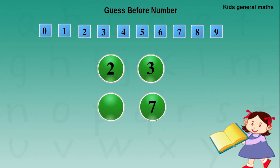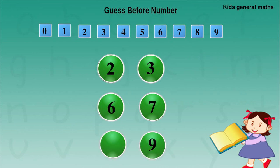Next they are given 7. So before 7, what is it? In the number line, before 7 is 6. Next they are given 9. In the number line, before 9 is 8. So before 9 is 8.